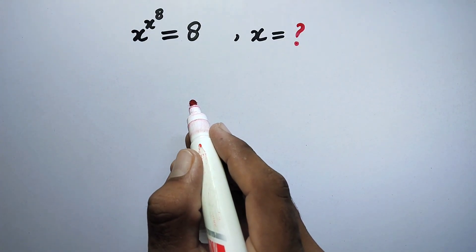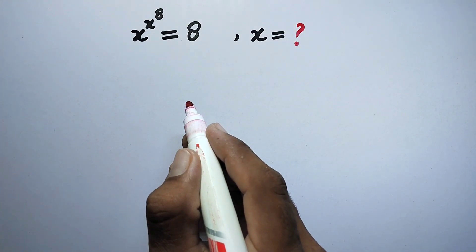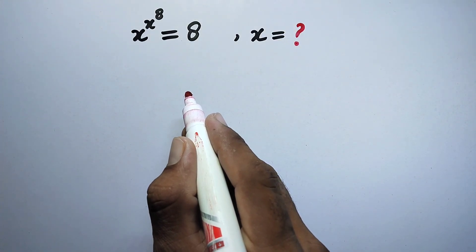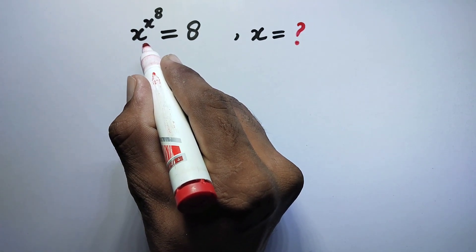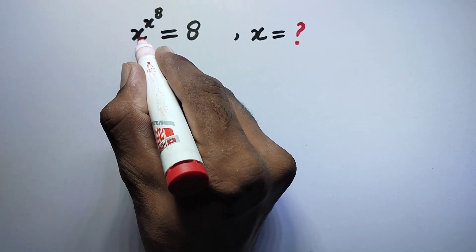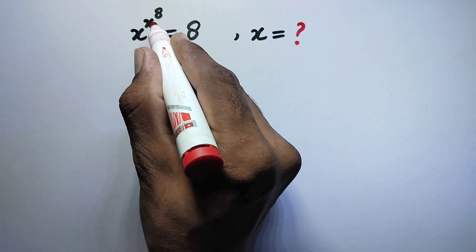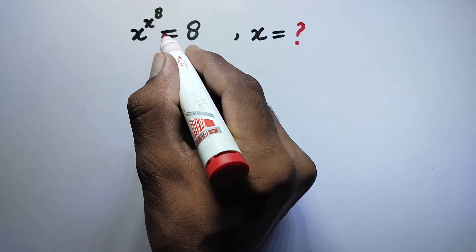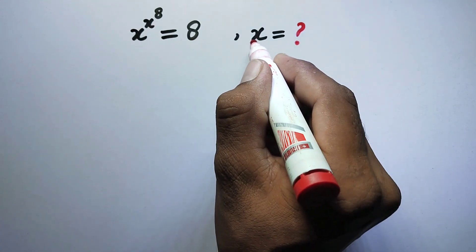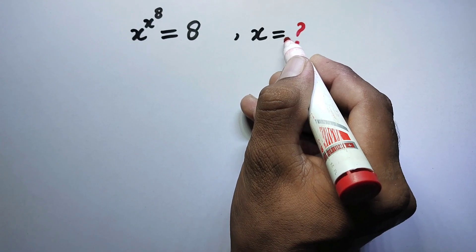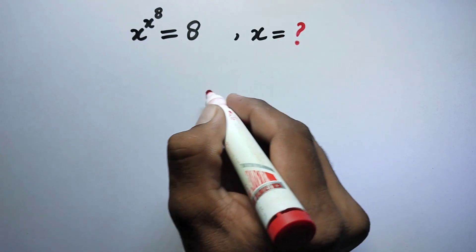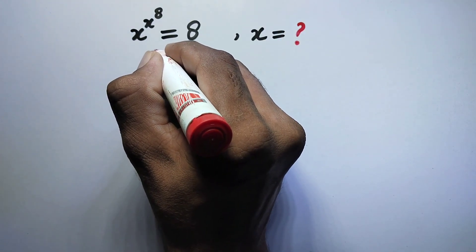Hello everyone and welcome to Explode Maths. Today we have a very nice Olympiad math problem to solve: x raised to power x raised to power 8 is equal to 8, and we have to find the value of x. So let us see the solution.